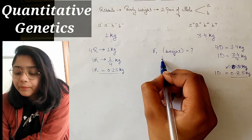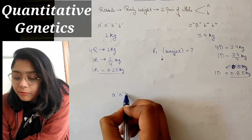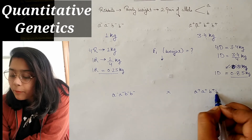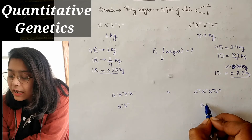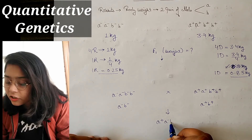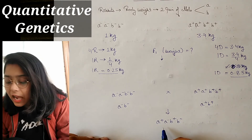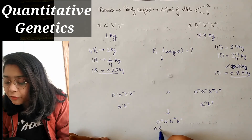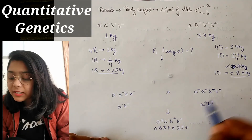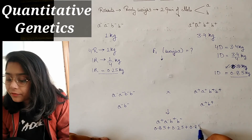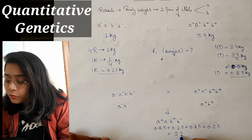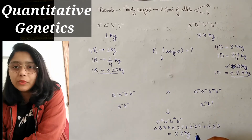हमारा F1 का genotype क्या होगा? If हम A negative, A negative, B negative, B negative का cross कराएं A positive, A positive, B positive, B positive के साथ, तो F1 generation आएगा A positive, A negative, B positive, B negative. यहाँ A positive 0.85 + A negative 0.25 + B positive 0.85 + B negative 0.25 = body weight 2.2 kg.